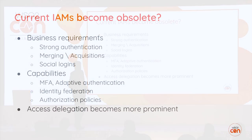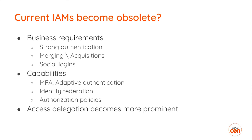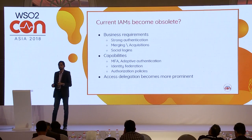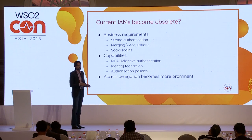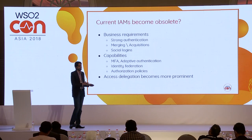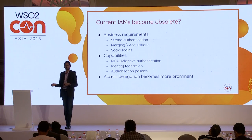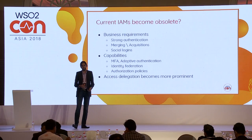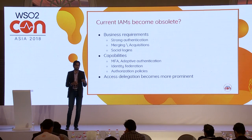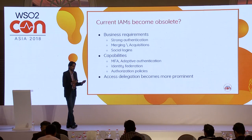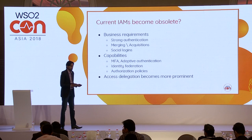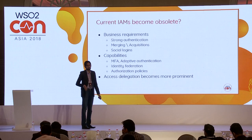With all these challenges, the question arises: will current IAM become obsolete? In fact, it does not. Current IAM solves actual business requirements — enforcing strong authentication when accessing particular resources, handling mergers and acquisitions, enabling social login for customer-facing applications. Current IAM systems have various functionalities catering to these needs, and those are still needed. What becomes more prominent is the access delegation aspect, which becomes a more critical functionality in the microservice context.